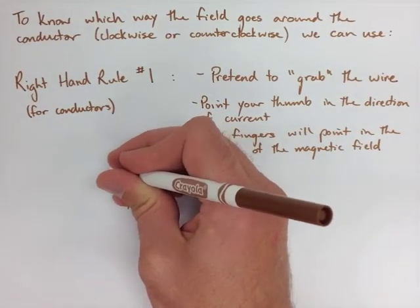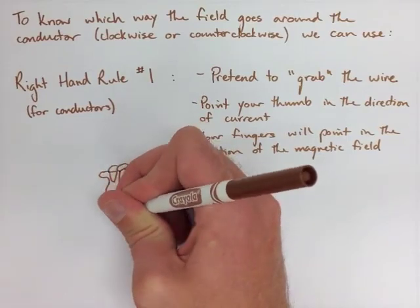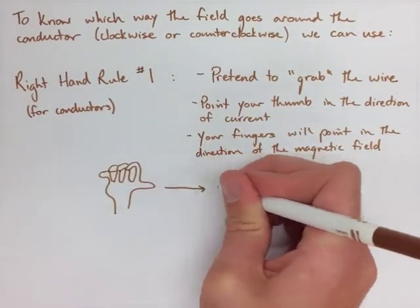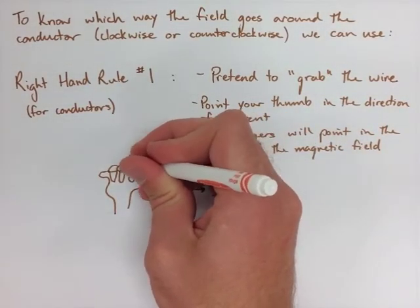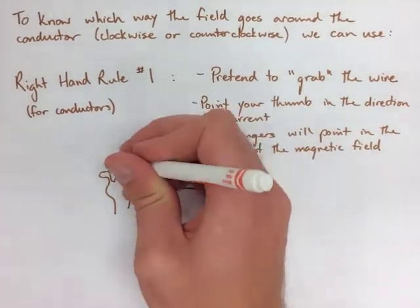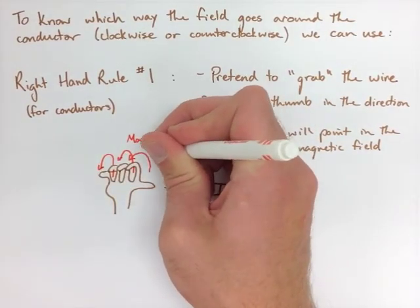So if you look here, we're drawing a hand. Now what we've drawn is a hand that's grabbing a wire with the current going to the right. The current's going to the right, that's where our thumb points, and that indicates that the fields are flowing around in the direction of our fingers.